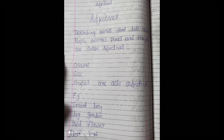So, in simple words, you can say the words that describes people, animal, places, things are called adjectives.